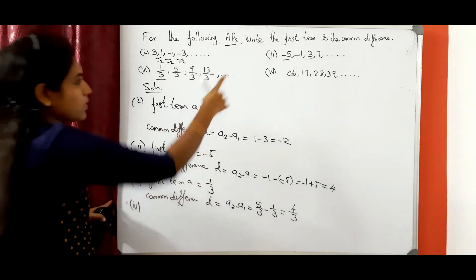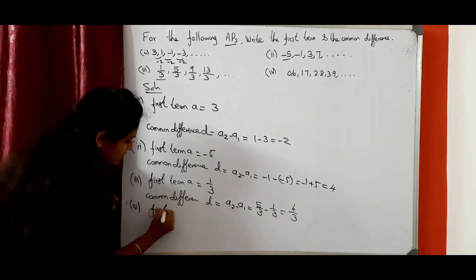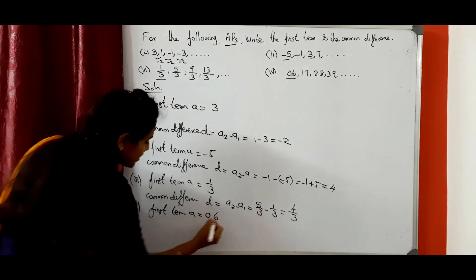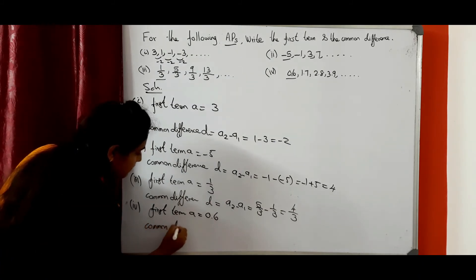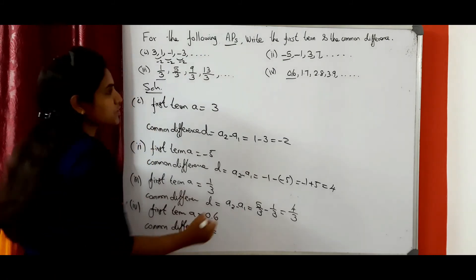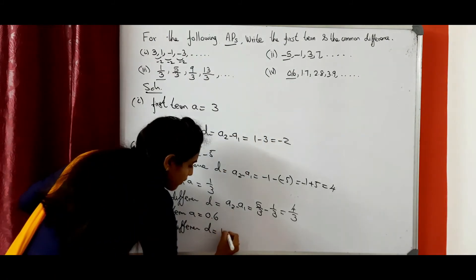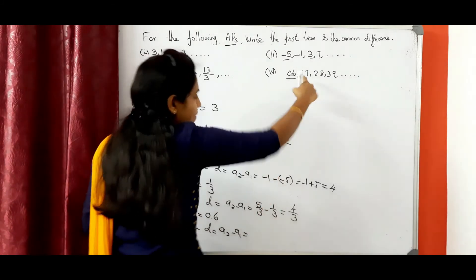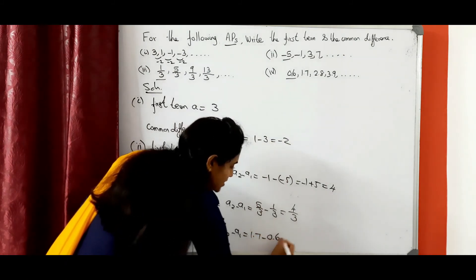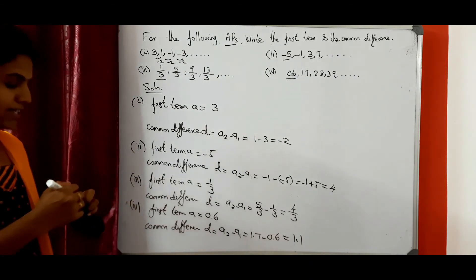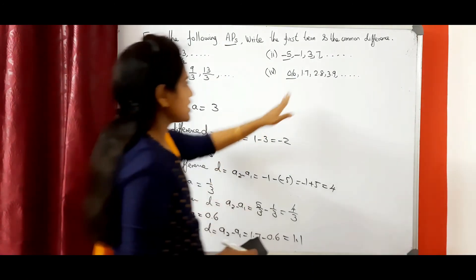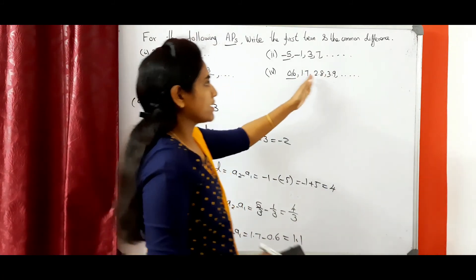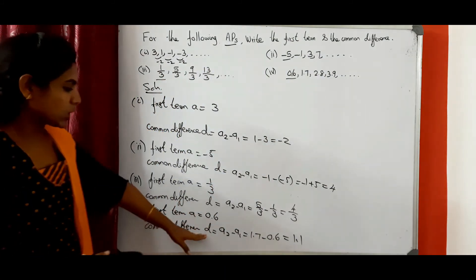Last problem: first term A equals 0.6. Common difference D equals a2 minus a1: 1.7 minus 0.6 equals 1.1. So 1.1 is the common difference. This is very easy. First term we know; common difference means second term minus first term, or third term minus second term, or fourth term minus third term. If you do that, we will easily get the common difference.